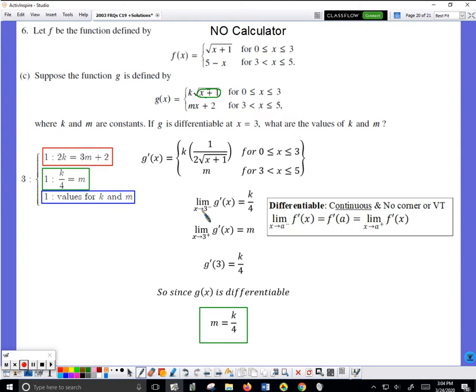The nice thing about this problem is that it seems like you're doing the same thing twice. The limit as x approaches 3 from the left of g prime means I'm plugging in a value of x that's slightly less than 3. So close to 3 plus 1 is close to 4, square root would be 2, 2 times 2 is 4, that's one fourth k. So this limit is k over 4 when x is slightly more than 3.